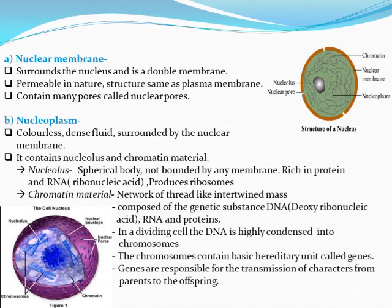There is a difference between chromatin and chromosomes. When the cell is not dividing, thread-like structures called chromatin are seen inside the nucleus. You know that cells divide — when you were small and have grown bigger, the cells were continuously dividing.